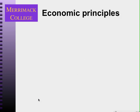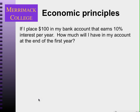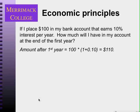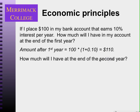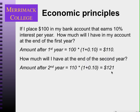The basic idea is this: if I place $100 in my bank account that earns 10% interest per year, I can calculate how much I'll have at the end of one year, which is $110 — I put in $100 and add 10% during that year. How much will I have at the end of the second year? At the beginning of the second year I have $110, and I'll earn 10% on that amount, resulting in $121 after the second year.